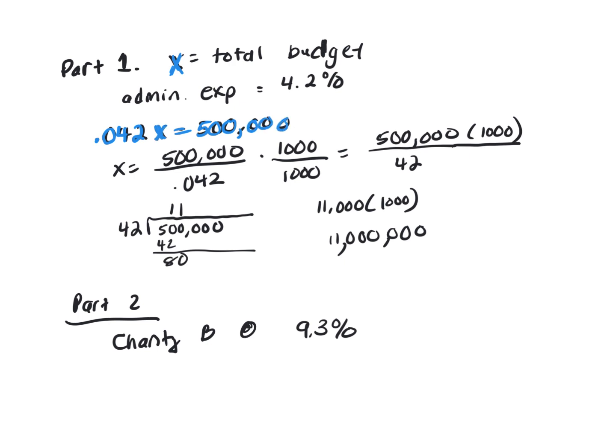I divided both sides by 0.042. I didn't like that 0.042, so I multiplied top and bottom by 1,000. I didn't actually multiply the 500,000 by 1,000. I left it as 1,000 over here. So I will have to multiply my result by 1,000.